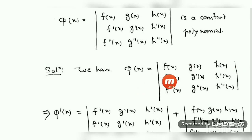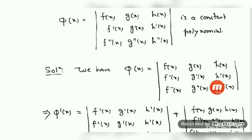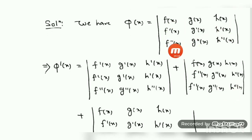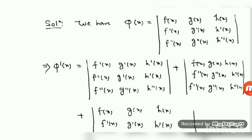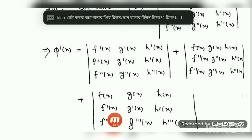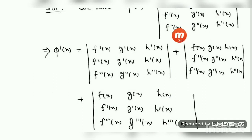I have considered the given determinant φ(x) with rows: f(x), g(x), h(x); f'(x), g'(x), h'(x); f''(x), g''(x), h''(x). Taking the differentiation row-wise: differentiate the first row — f'(x), g'(x), h'(x) — keeping the second and third rows as it is. Then differentiate the second row — f''(x), g''(x), h''(x) — keeping the first and third as it is. Then keep the first two rows as it is, and differentiate the third row: that gives f'''(x), g'''(x), h'''(x).